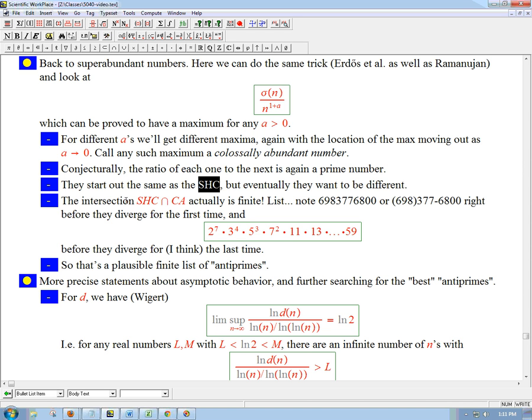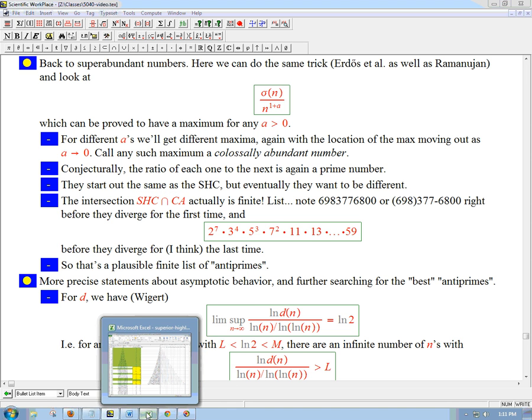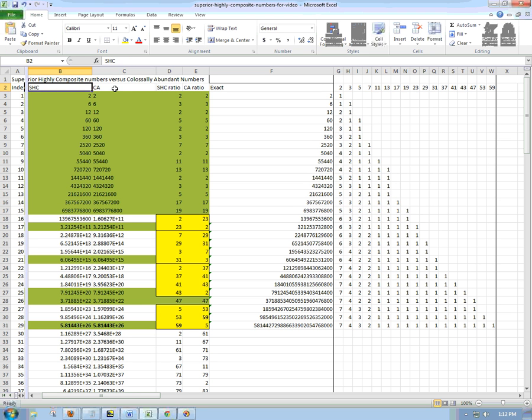They're going to diverge eventually. And here's the cool thing - because of that divergence, the intersection is actually a finite list. So let's look at the list again. That's why I've got these two lists right next to each other - superior highly composite (SHC) and CA (colossally abundant numbers). The things highlighted in green are the ones that they agree.